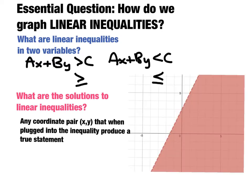Whenever we graph these linear inequalities, we'll get a line, and then one side of this line will be shaded — this is where all of the solutions lie. For this problem, the point (0,0) would be a solution, because all points in the shaded region produce a true statement when plugged into the inequality.